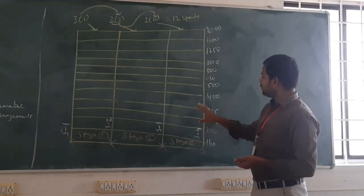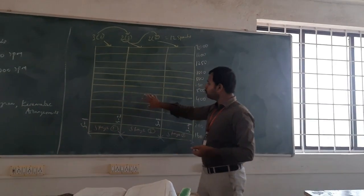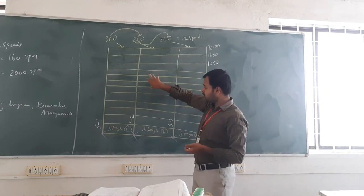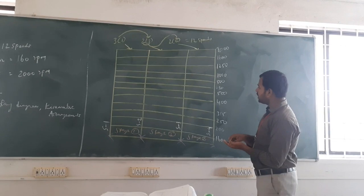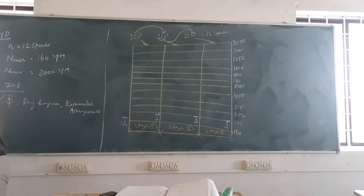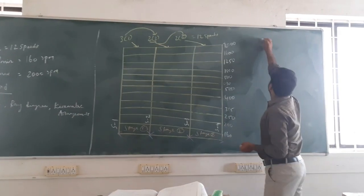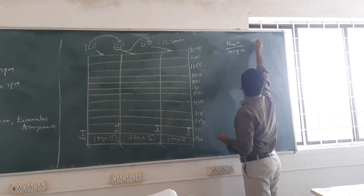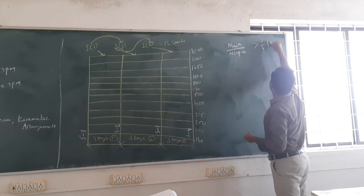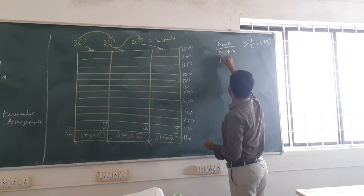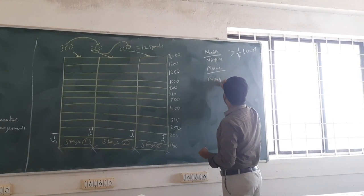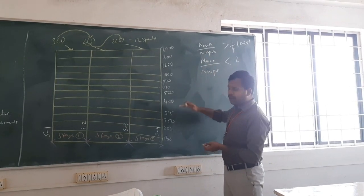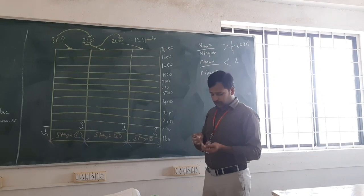Now we want to calculate the connections from stage 1 to stage 2, and stage 2 to stage 3. To choose the input speed at each stage, we verify using two conditions: n minimum divided by n input must be greater than or equal to 0.25, and n maximum divided by n input must be less than or equal to 2.